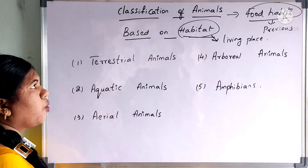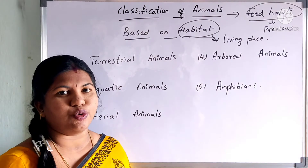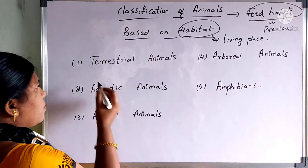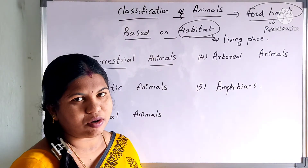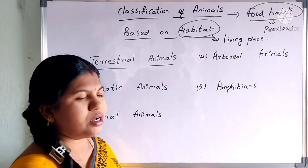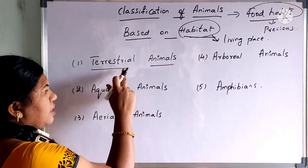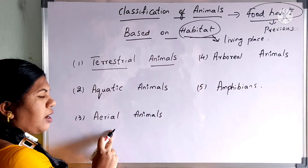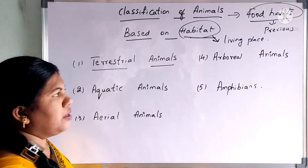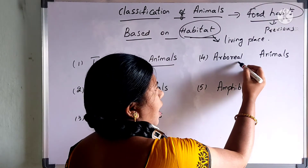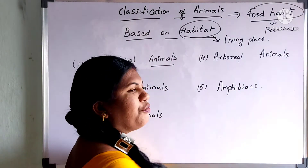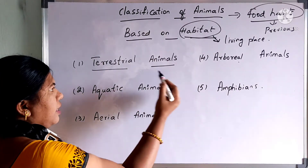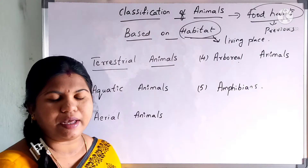Here we are going to classify the animals into totally 5 categories. The first one is terrestrial animals, the second is aquatic animals, the third is aerial animals, the fourth is arboreal animals, and the fifth is amphibians. I am going to explain each and every classification in detail.